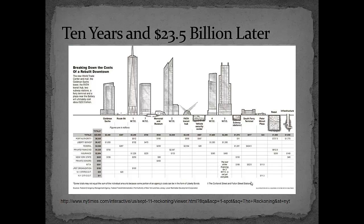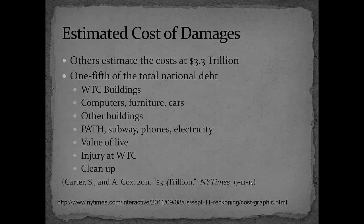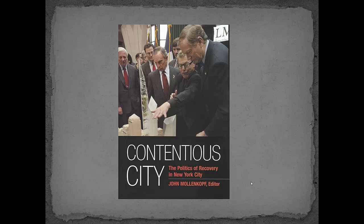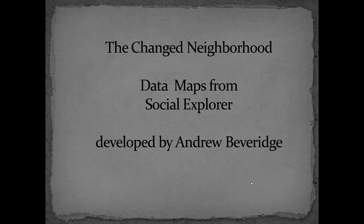Estimates of the reconstruction appeared on 9-11-11 in the New York Times: $23.5 billion. Others estimate the cost at $3.3 trillion, not including the war. John Molenkopf is one of scores of social scientists, many at CUNY, who have and continue to write informatively about the reconstruction and the interface of individual and collective memory through the memorial with all of its accompanying conflicts. Andrew Beveridge and his Social Explorer program, available as a database in any CUNY library, permit easy analysis of the changing demographics in the lower and urban areas.